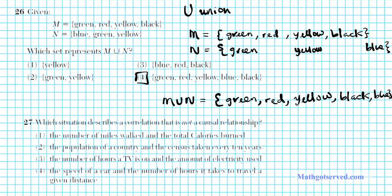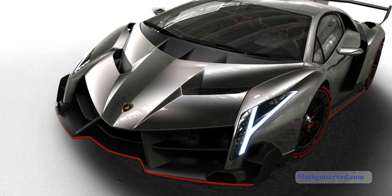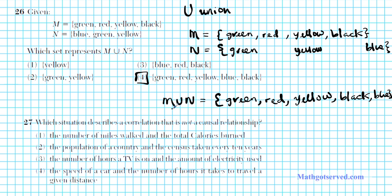Now what if you were asked to find the intersection? What if you were asked to find M intersect N? M intersect N is going to be the elements that are common to the two sets. U is union, and this right here is intersection. What's common in both of them? The intersection is green and yellow.